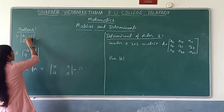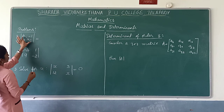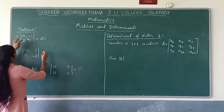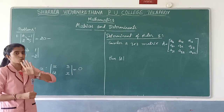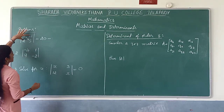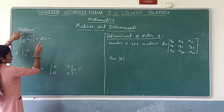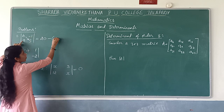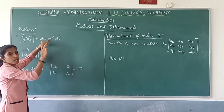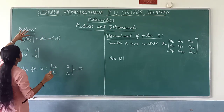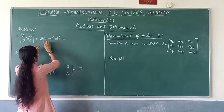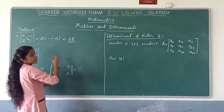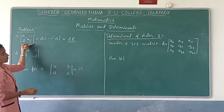It is this cross multiplication: first we have to cross multiply these two elements, that is 4 into 5 = 20, then minus sign in between, 2 into minus 1 which is minus 2. So minus of minus 2 gives plus 2. This is equal to 20 plus 2 = 20. This is the value of the given determinant.